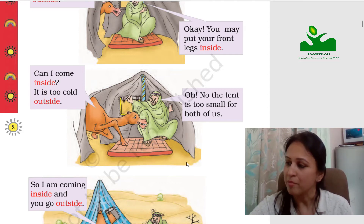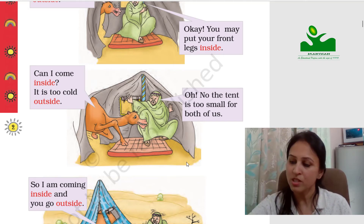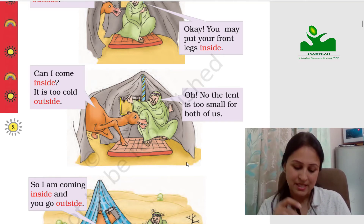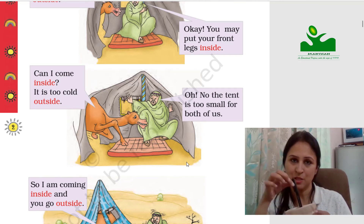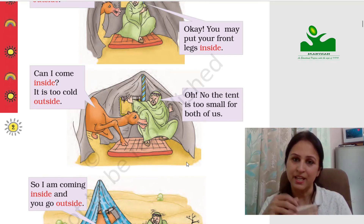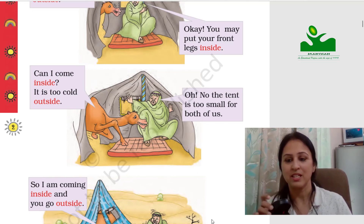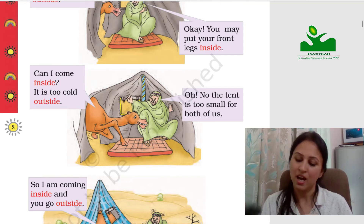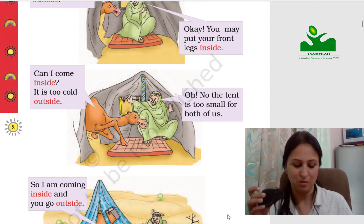Let me show you another example. I have this pouch here with me — it is empty, it has nothing in it. I will put one pen inside it. So this pen is inside the pouch. This mouse is outside the pouch. Do you want me to keep it inside? Let me try to keep it inside.